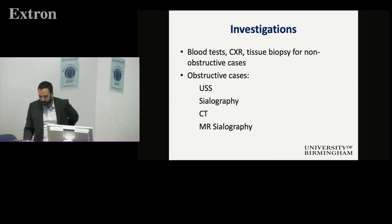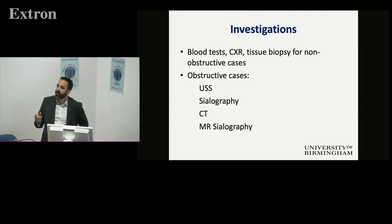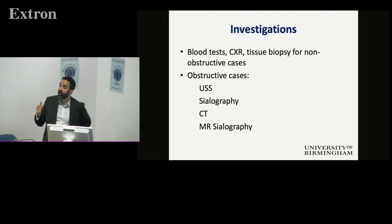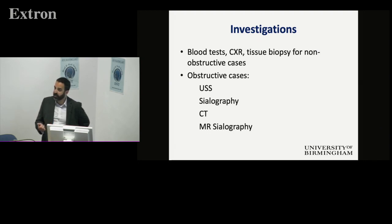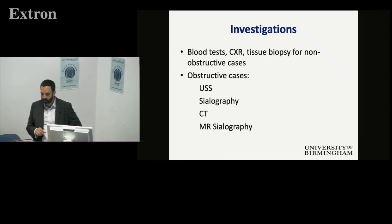So how are we going to investigate people? Given that many of these are systemic conditions, you've got to be thinking widely beyond just imaging. You want to be looking at blood tests, screening for inflammatory conditions, sarcoid, and GPA. You may want biopsies, and a chest X-ray can be helpful. Ultrasound is probably the commonest first-line investigation and can look at an awful lot in terms of the duct and structure of the gland. Sialography — a bit of dye down the ducts — is carried out in most places now to map out the ductal process.